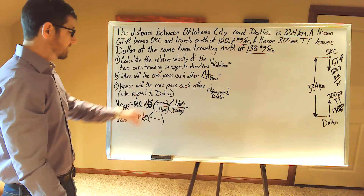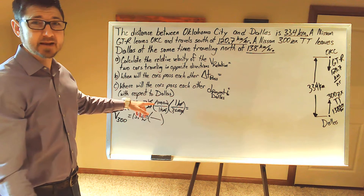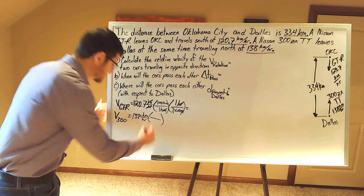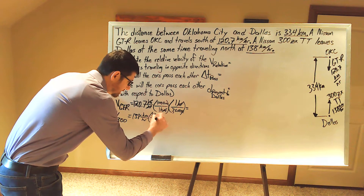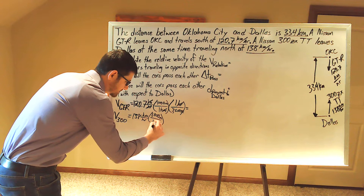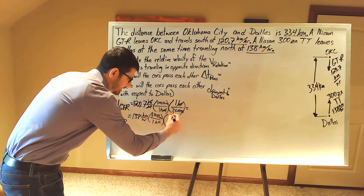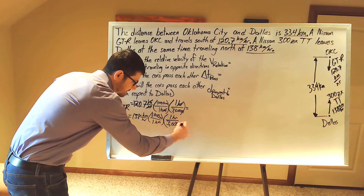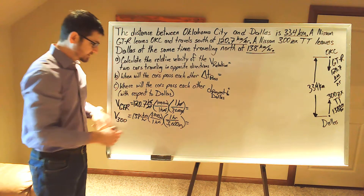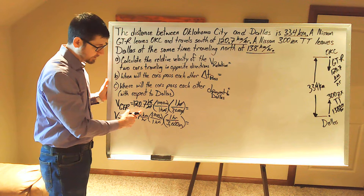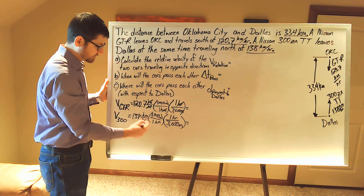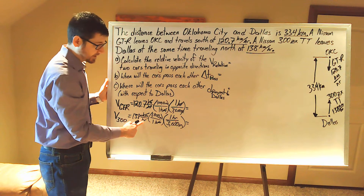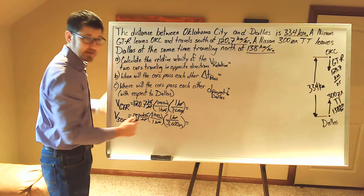We perform dimensional analysis the same way because we're converting from kilometers per hour to meters per second. We know there are 1,000 meters in every kilometer, and in one hour we have 3,600 seconds. Units of kilometers in the numerator and denominator cancel, and units of hours in the denominator and numerator cancel.